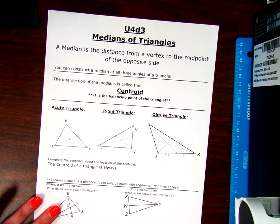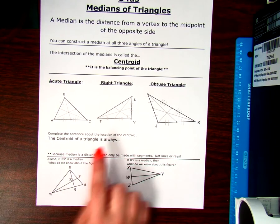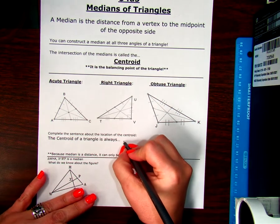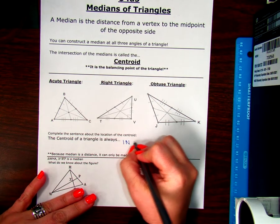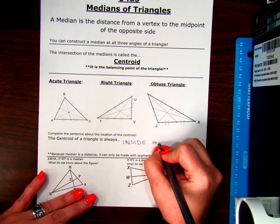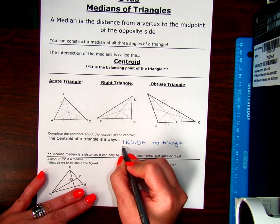So, no matter what type of triangle we have, our centroid of the triangle is always, always going to be inside the triangle, always inside the triangle.